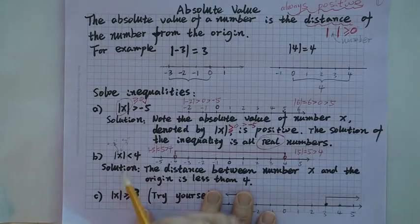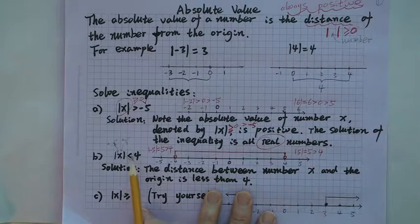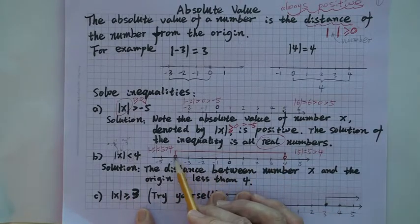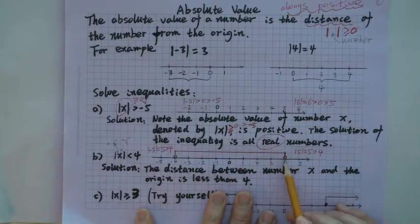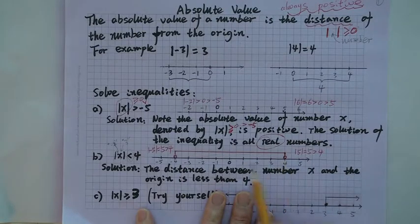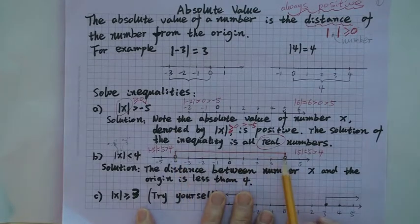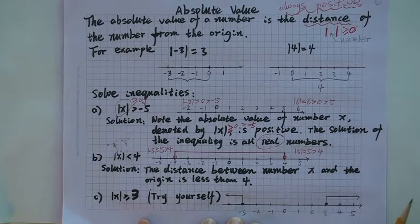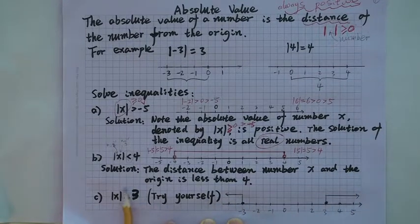There is no equal sign here. If there were an equal sign, then 4 would be included. That's why I use empty circles from this point to this point — it means those two points are excluded. Now this next one I want you to try yourself: the absolute value of x is greater than or equal to 3.